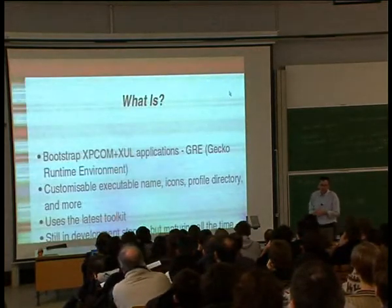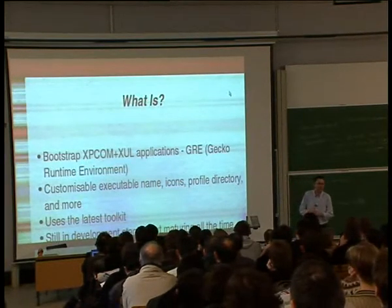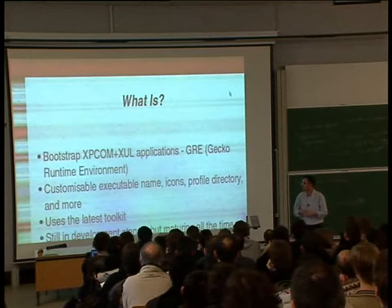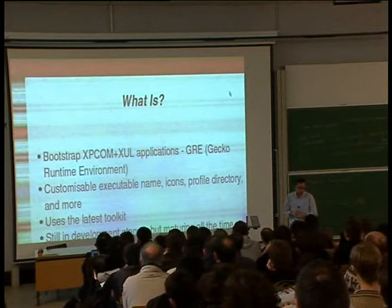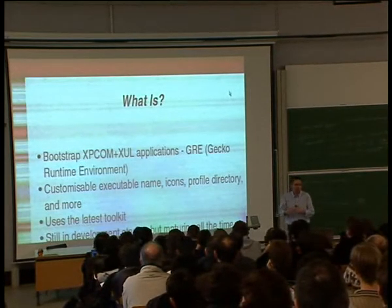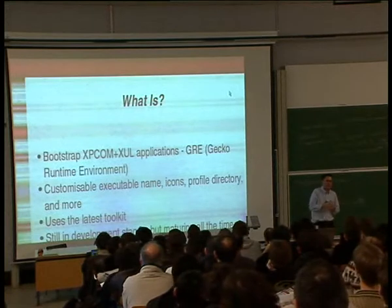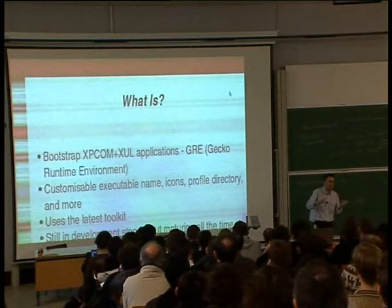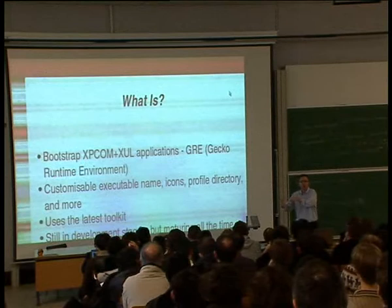What is XULRunner? I'm sure you all know what Gecko is — it's the main rendering engine of the Mozilla platform. With it you get customizable executables, icons, a profile, your own process space, etc. It uses the latest toolkit. The old Mozilla Suite toolkit is now more or less obsolete; it's still being used by the SeaMonkey project, but most products have moved to the Firefox/Thunderbird/Sunbird toolkit.